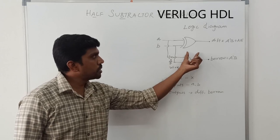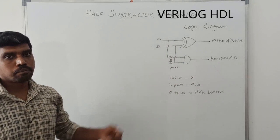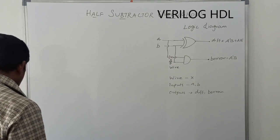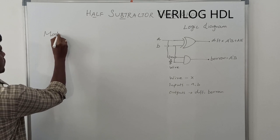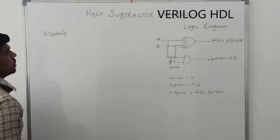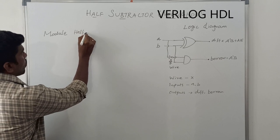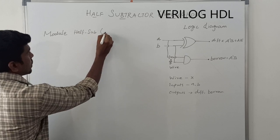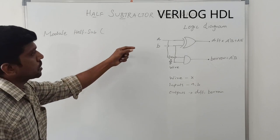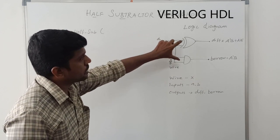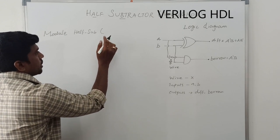Now, this logical diagram is implemented in a program. As you should first write module, then module name. Module name is half-subtractor. Then, within a bracket, you assign what are the variables used in the logical diagram.